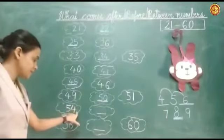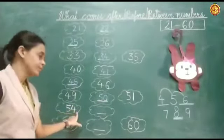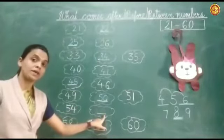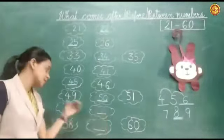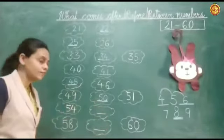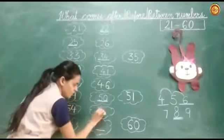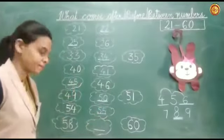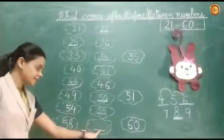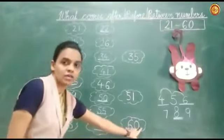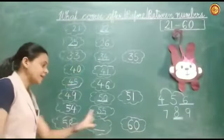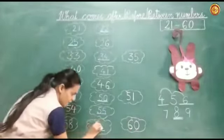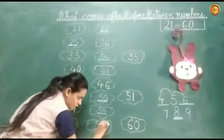Now, next number is 54. The dash is after 54, so what will come here? After numbers — what will come after 54? 55. Next number is 58 dash 60. Between 58 and 60, what will come here? 59. Do like this.